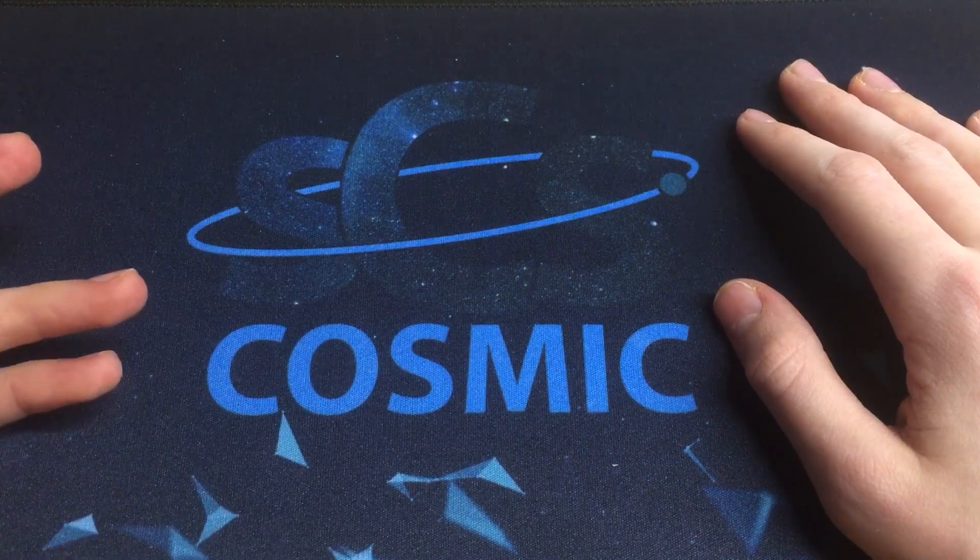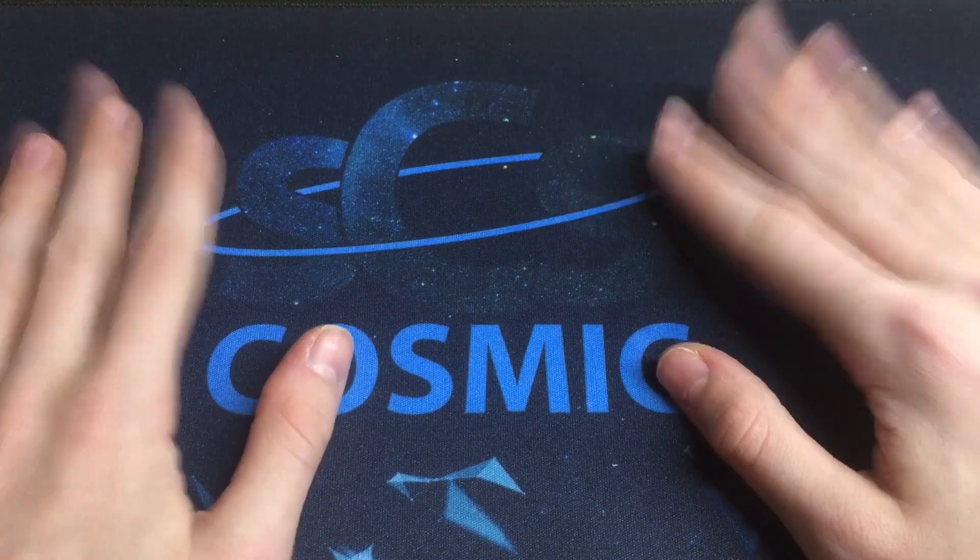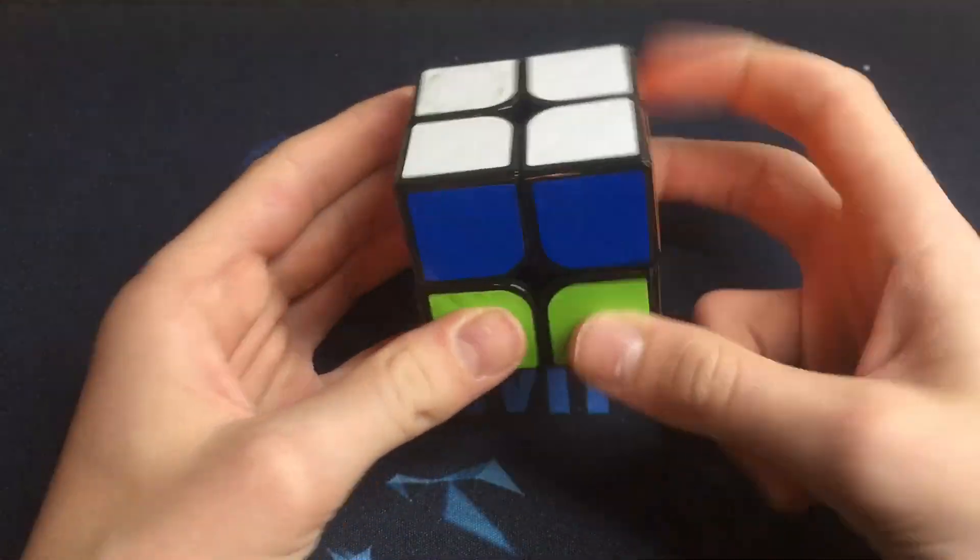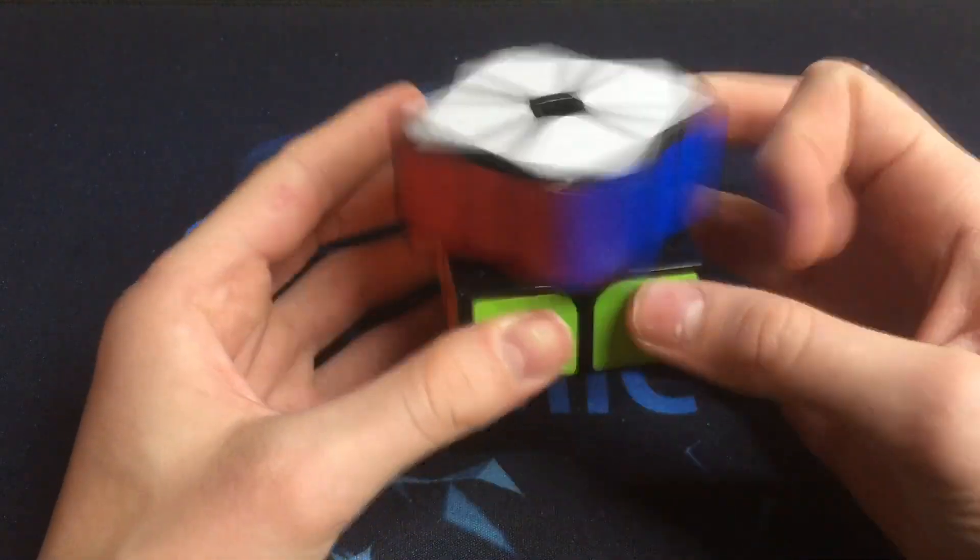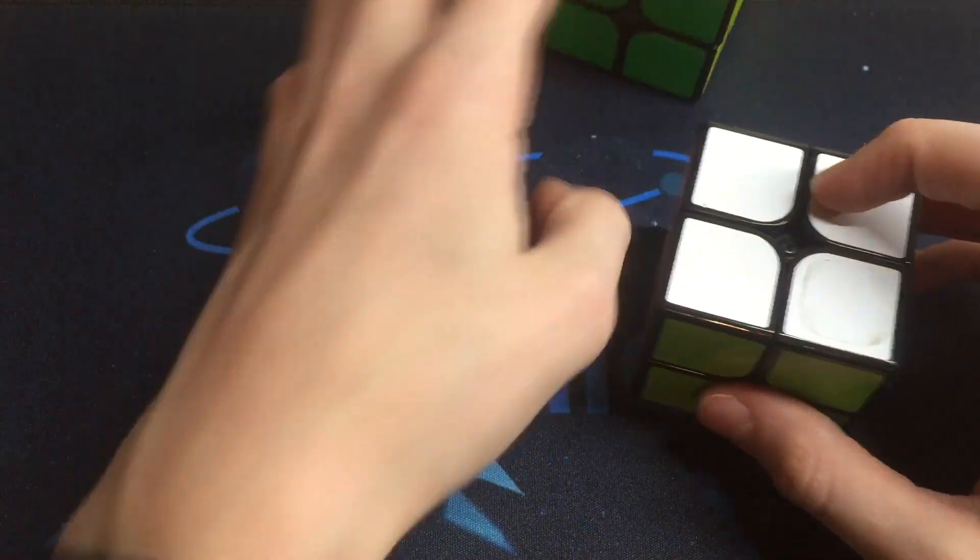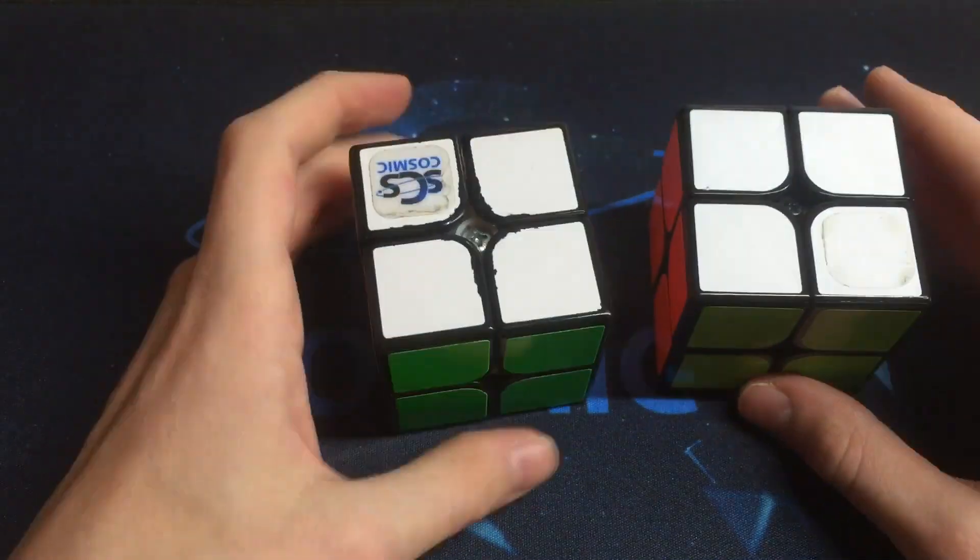I'll first start with WCA puzzles and probably move on to the non-WCA after. Okay, so we'll start off with the Dayan 2x2. This is in new plastic as well, so it's very smooth, very nice. This is pretty much competing with the cosmic 2x2.